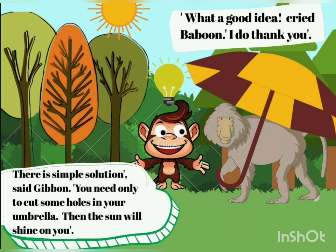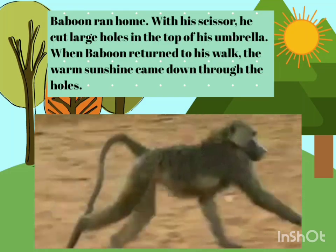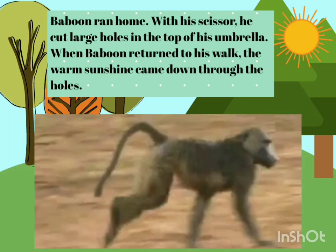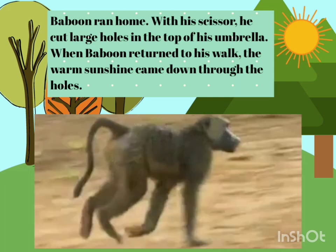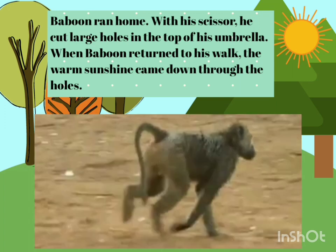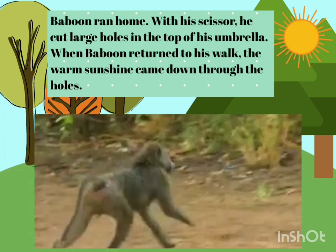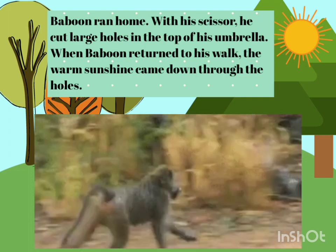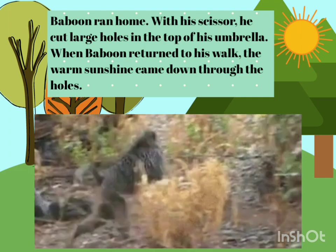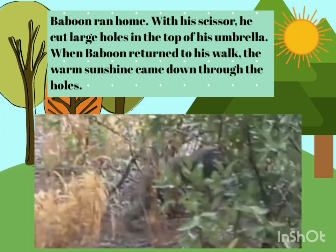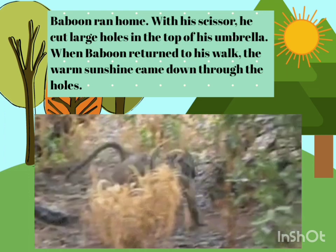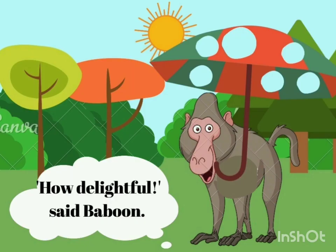So Baboon ran home. With his scissors, he cut large holes in the top of his umbrella. When Baboon returned to his walk, the warm sunshine came down through the holes. Baboon didn't think about anything — he just went home and cut large holes in the top of his umbrella. How delightful, said Baboon. Delightful means he was feeling very satisfied and enjoying the warm sunshine.